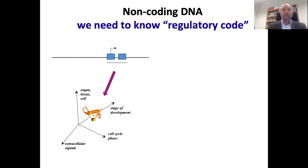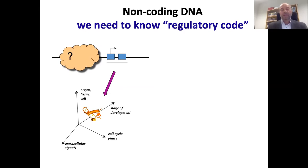In our genome we have some knowledge about how proteins are encoded using the genetic code, and some rules about how this can be folded into a functional protein — which is also still quite a question. But what that protein does in the organism is still quite unclear: in which organ, tissue, or cell it has to be expressed, at which stage of development, on which cell cycle phase, under which extracellular signals. All this information about where, when, and how a protein has to be expressed is stored somewhere in this huge unknown region of the genome.